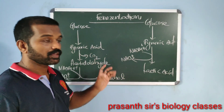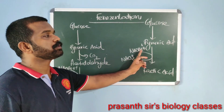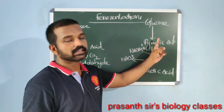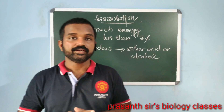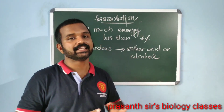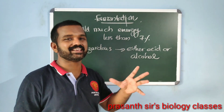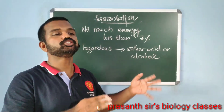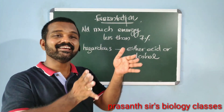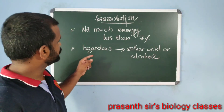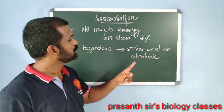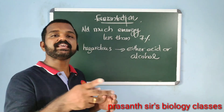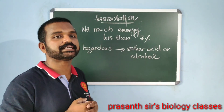In both alcoholic fermentation and lactic acid fermentation, NADH + H⁺ is the reducing agent. In alcoholic fermentation, acetaldehyde is reduced to ethanol; in lactic acid fermentation, pyruvic acid is reduced to lactic acid. In both cases, less than 7% of the energy in glucose is released, and not all of it is trapped as ATP, making fermentation energetically less efficient than aerobic respiration. Both processes are hazardous because either acid or alcohol is produced. In the case of yeast, they poison themselves to death when alcohol concentration reaches 13%.